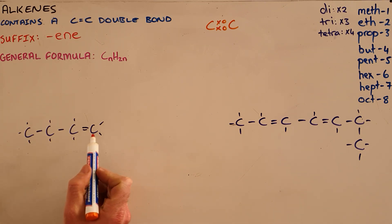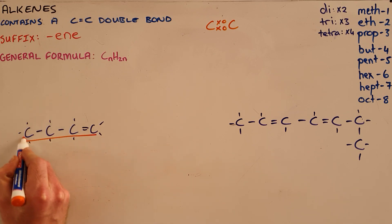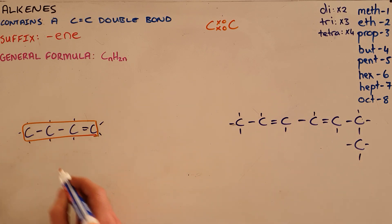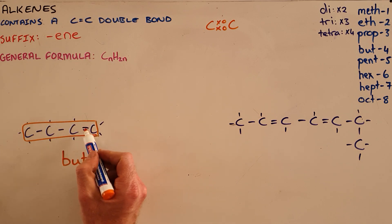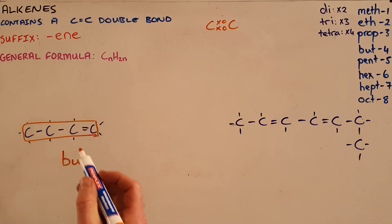We name an alkene by identifying the longest chain containing the double bond, which in this case is four carbons. Four carbons gets the prefix but, and because this is an alkene containing a double bond, we call it butene. But we need to indicate the position of that double bond.